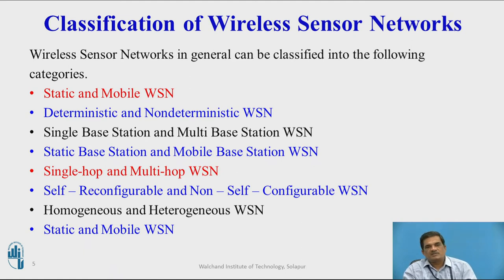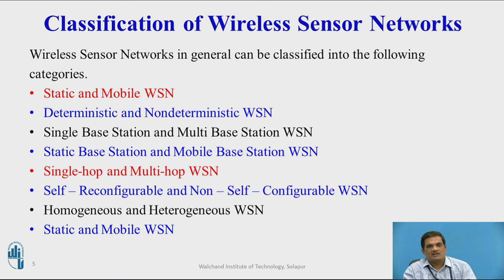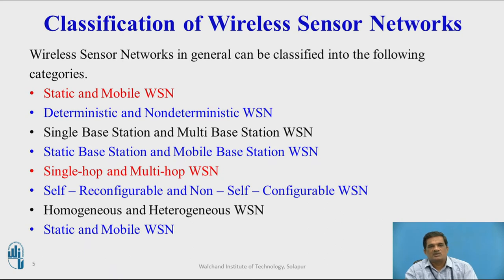One type is static and mobile wireless sensor networks, in which nodes exist either as static or mobile. In a static wireless network, nodes are static and have only sensing capabilities. In a mobile wireless sensor network, along with sensing capability, sensors also have moving capabilities, allowing them to move from one location to another to sense physical conditions within a sensing field. In deterministic wireless sensor networks, nodes are systematically placed with quality in mind. In non-deterministic wireless sensor networks, nodes are randomly distributed without keeping quality in mind.